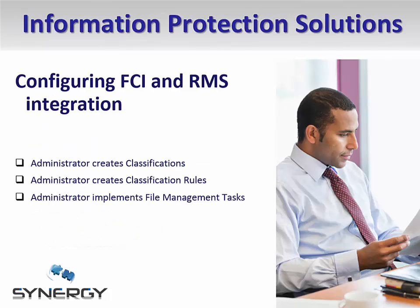So how does FCI and RMS integration work? First, an administrator creates classifications which are used to tag documents. For example, you could create a series of classifications based on business impact, such as high and low business impact. Then, the administrator creates classification rules which indicate the different triggers that cause documents to be classified. Finally, the administrator implements file management tasks which apply a particular action, in this case protecting with RMS, to documents with particular classifications.